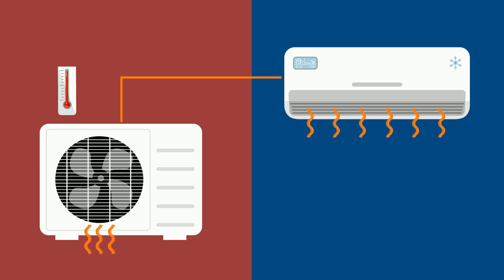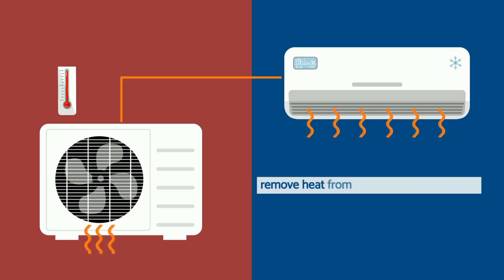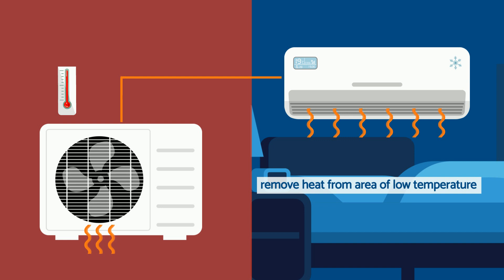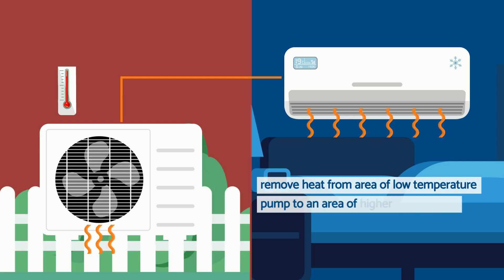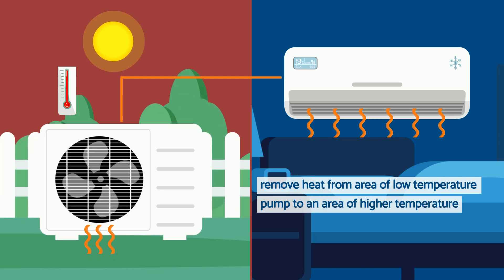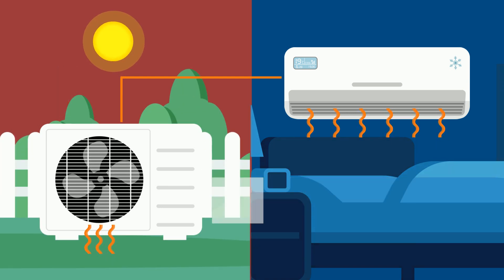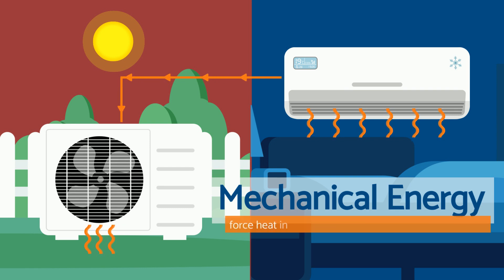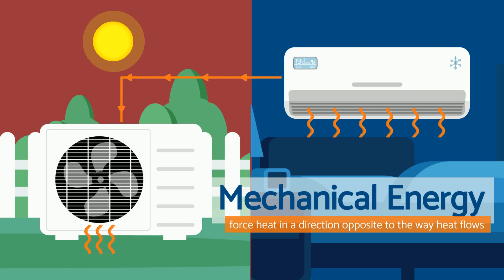The air conditioner is intended for removing heat from an area of low temperature and transferring it, or pumping it, to an area of higher temperature. Mechanical energy is required to pump because we are forcing heat to be transferred in a direction that is opposite to the way heat will flow naturally.